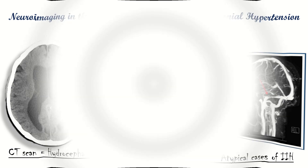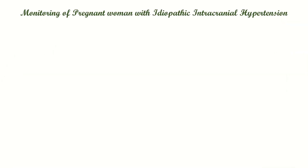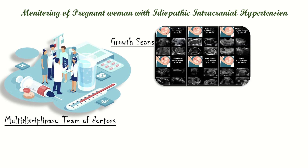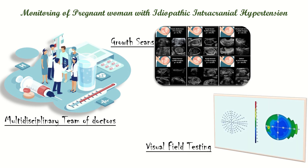Women with idiopathic intracranial hypertension must be monitored closely throughout pregnancy by a multidisciplinary team. Neurology and ophthalmology reviews must be undertaken regularly, and a review in an obstetric anesthetic clinic is recommended to discuss the implications of analgesia in labor. Growth scans are required for obstetric indications alone. If the patient's visual symptoms are stable, visual field testing may be done every two to three months.